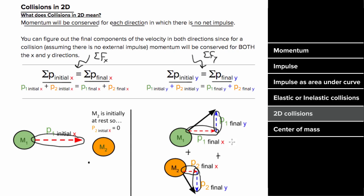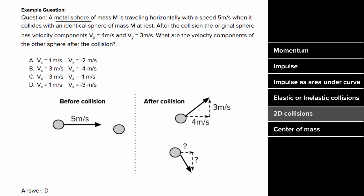So what's an example involving collisions in two dimensions look like? Let's say a metal sphere of mass m is traveling horizontally with five meters per second when it collides with an identical sphere of mass m that was at rest. After the collision, the original sphere has velocity components of four meters per second and three meters per second in the x and y directions.